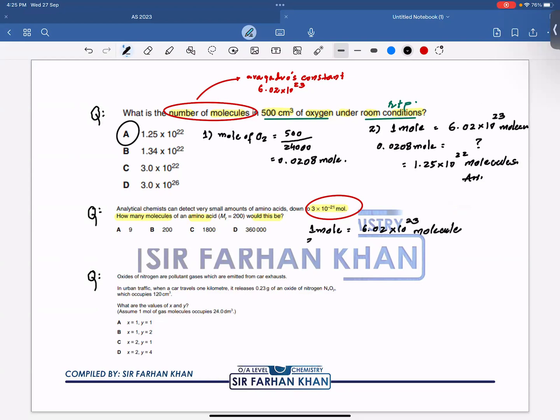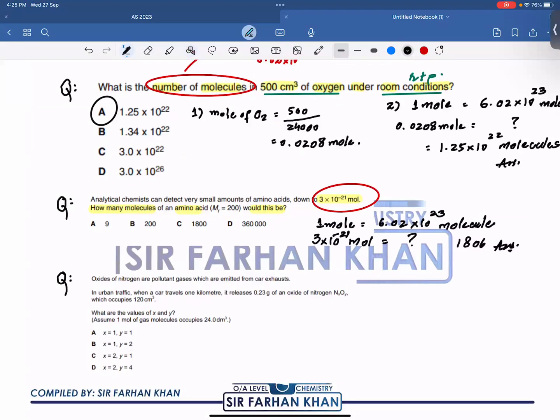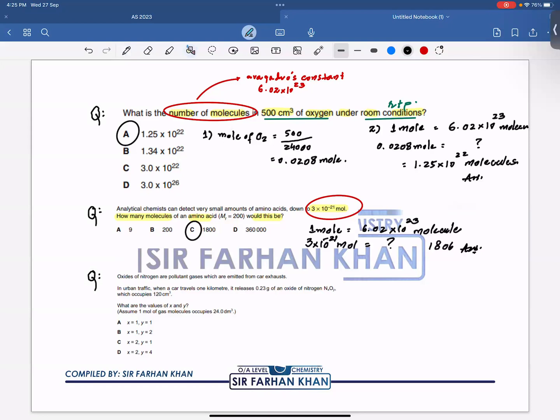Concept is this: 1 mole is always equals to 6.02 times 10 to the power of 23 molecules. Now, examiner ne mujhe kitna diya hai? 3 times 10 to the power minus 21 mole. So molecules kitne honge? 6.02 times 10 to the power of 23 into 3 exponent minus 21. So it's going to be 1806. So 1806 is my answer. So check karte ki 1806 kaha par given hai. So 1806 ki close value jo hai wo C mein hai. Which is why C is going to be the right answer.